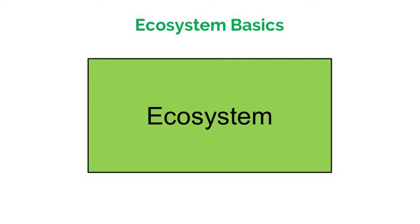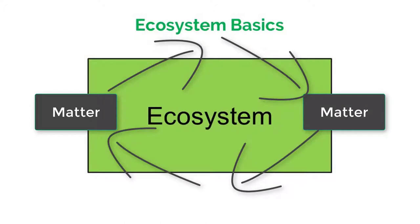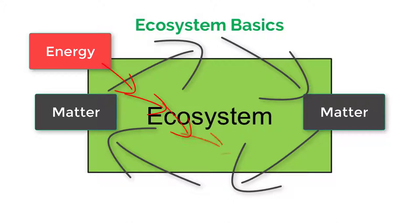In video 4.1, we learn that matter, or nutrients, are cycled and reused in an ecosystem. That cyclical nature only applies to matter and does not apply to energy. Instead of cycling, energy flows through ecosystems, meaning it enters and also exits and cannot be reused. This difference is very important, and we will discuss why it exists in this video.